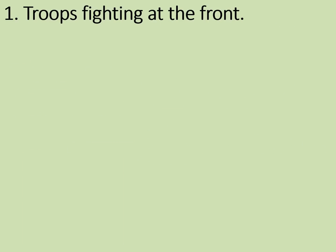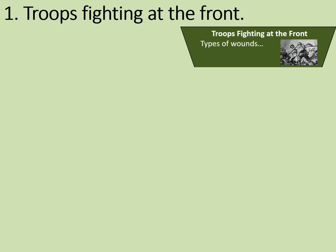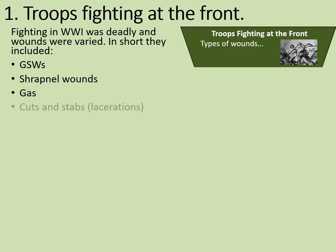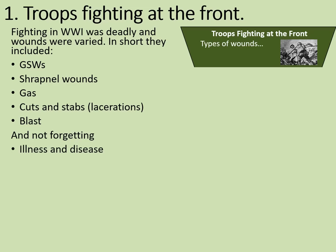Stage one involves troops fighting at the front. Fighting in World War One was deadly and wounds were varied. They included GSWs or gunshot wounds, shrapnel wounds, gas, cuts and stabs — which we also call lacerations — blast, and not forgetting illness and disease. There are separate videos on these things — have a look at those first if you're unfamiliar.